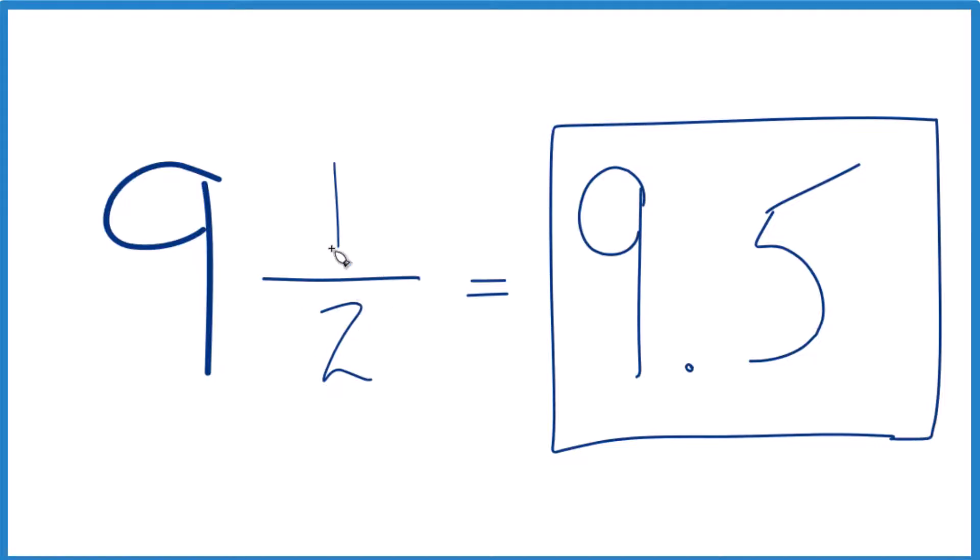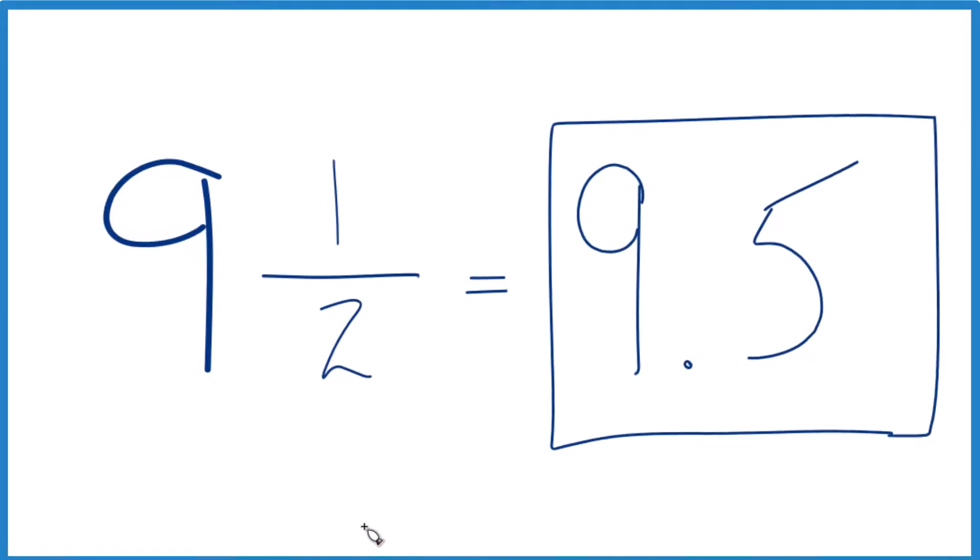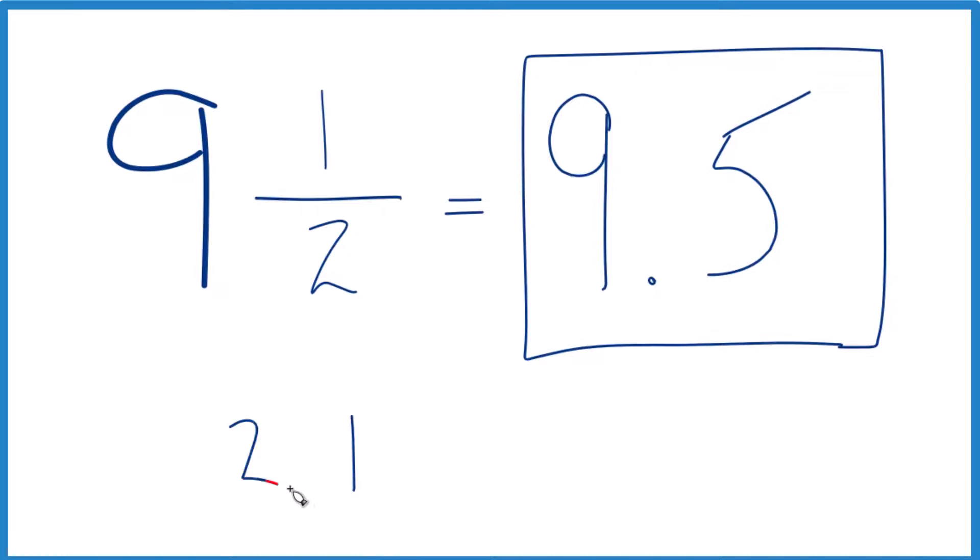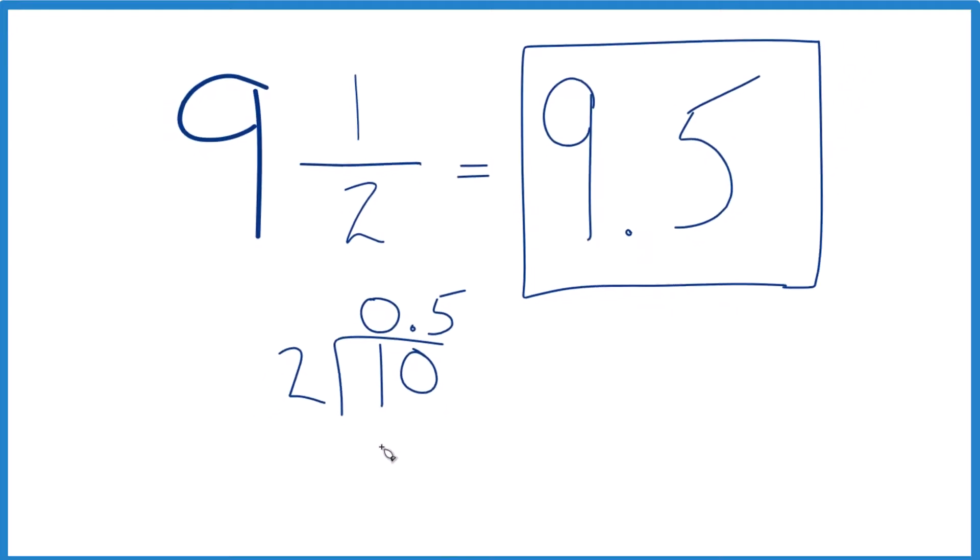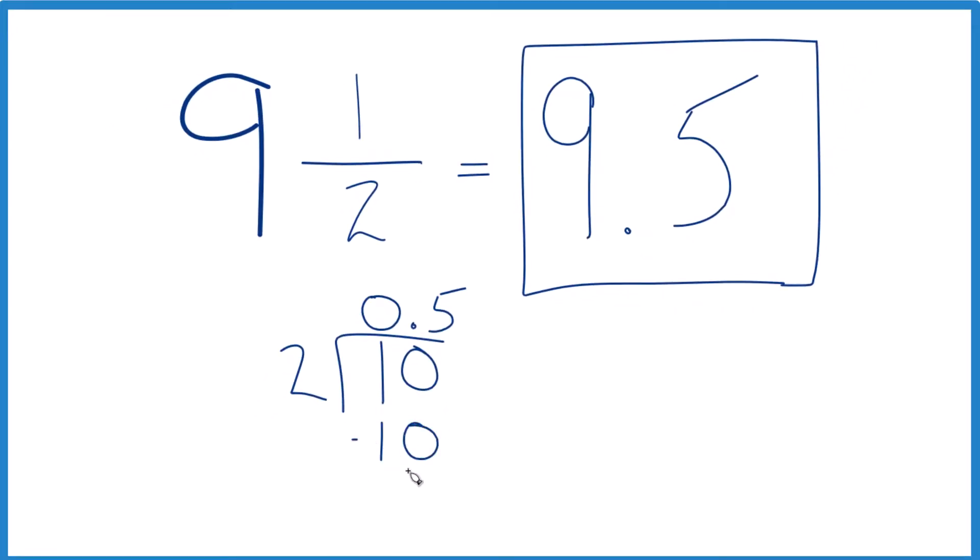But if you didn't know that, we could figure that out. We could take 1 and see how many times 2 goes into 1. So 1 divided by 2. 2 doesn't go into 1. We could call this 10 if we put a 0 and a decimal point here. Now, 5 times 2, that's 10. Subtract, no remainder.